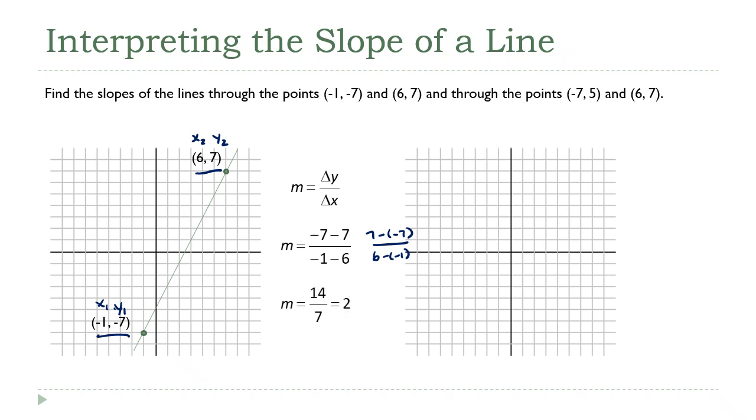All right, so now if you do the simplification here, this comes out to 14 sevenths, which is just two. All right, so now let's look at the other points: negative 7 comma 5 and 6 comma 7. I'll sketch that line in here again so we have it to look at.